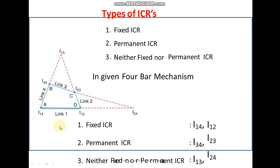In this diagram, different ICRs are shown. Consider any one ICR — i12, i14, i34, i23, or i13. ICR means Instantaneous Center of Rotation. i13 is the instantaneous center about which a given link is assumed to rotate. For example, link three is assumed to rotate about point i13. An ICR is the point about which the whole link is assumed to have a complete rotation during its motion.